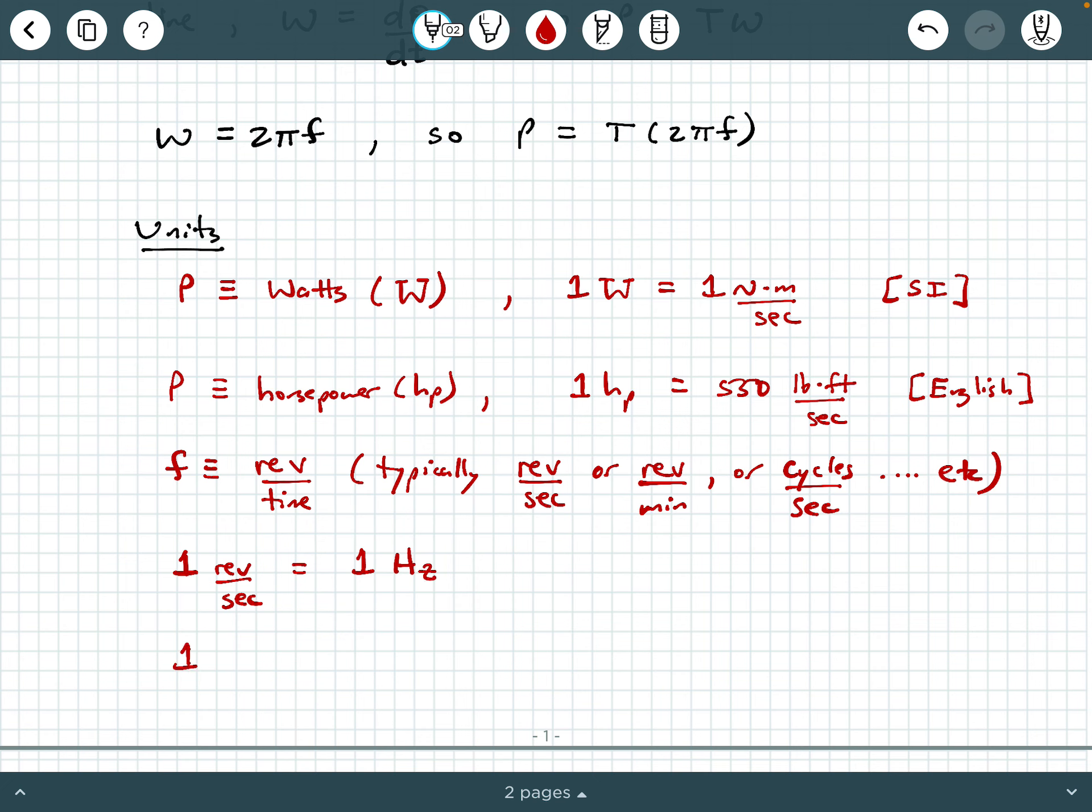Additionally, one cycle, if we think of this as a circular movement, one cycle is how many radians? Well, if you want to try to answer, do it now, pause the video, because I'm about to tell you one cycle is two pi radians.